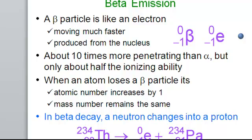Beta emission. A beta particle is like an electron moving much faster, but it's not an electron because it's coming out of the nucleus. Coming out of the nucleus, emitting a particle would show a change in turning in one conversion of another. So about 10 times more penetrating than alpha, only about half the ionizing ability. When an atom loses a beta particle, its atomic number increases by 1 and the mass number remains the same.